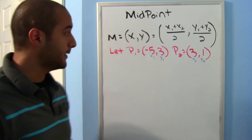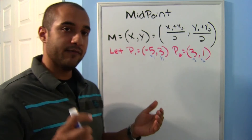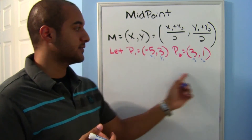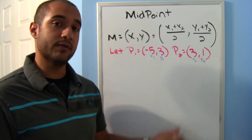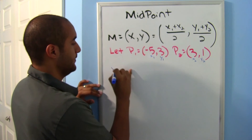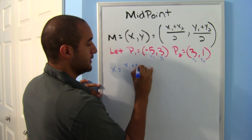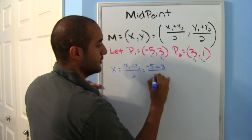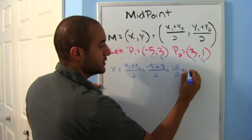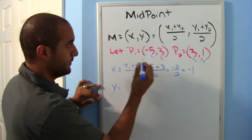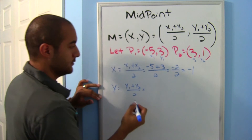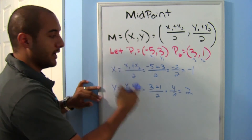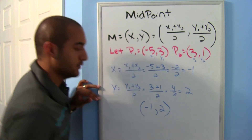Given two points, I want to find exactly what's in the middle using the midpoint formula. I'll find x first: x = (x1 + x2) / 2 = (−5 + 3) / 2 = −2 / 2 = −1. Now the y-coordinate: y = (y1 + y2) / 2 = (3 + 1) / 2 = 4 / 2 = 2. So my midpoint is (−1, 2).